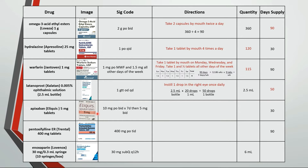This is typical dosing for the Eliquis starter pack. Take two tablets by mouth twice a day for seven days, then take one tablet twice a day. For a 30-day supply, the first taper is seven days followed by 23 days. So 2 times 2 times 7 is 28 tablets for the first part. The second part is 23 days: one tablet twice a day is 2 times 23 for 46 tablets. Add those up for a total of 74 tablets.